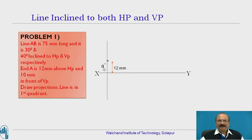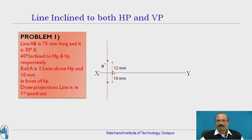Then you come for the next point, representing it as A dash, then come for the A point. A is 10 mm in front of the vertical reference plane, so measure 10 mm from the XY line, below the XY line. This is the 10 mm from the XY line below, as discussed in the previous lectures regarding how to measure distances above the horizontal plane and in front of the vertical plane in first angle projection. Now you have the position of A in the front view and position of A in the top view.